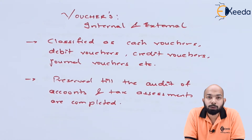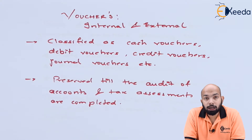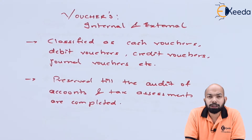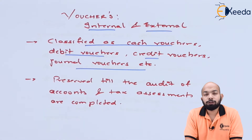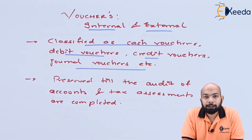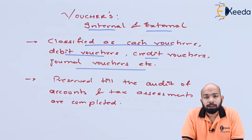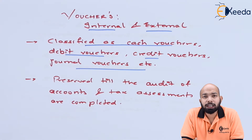We have to deal with different kinds of vouchers. The four basic kinds of vouchers are: cash vouchers, debit vouchers, credit vouchers, and journal vouchers. These are the four basic kinds of vouchers we deal with in normal business life.